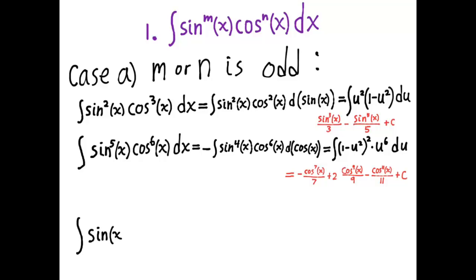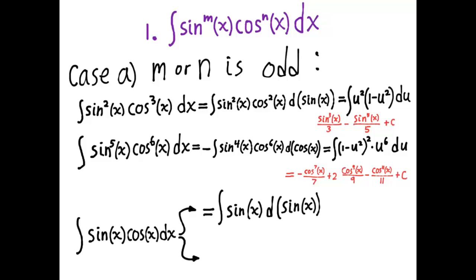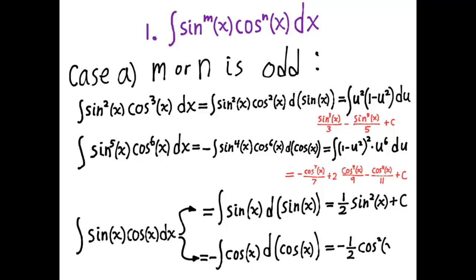What if m and n are both odd, as in the integral of sine of x times cosine of x dx? In that case, you have two different ways of integrating: you can use the fact that m is odd and integrate sine of x d sine x, or the fact that n is odd and integrate negative cosine of x d cosine of x. You get two different answers: one half sine squared of x plus c, and negative one half cosine squared of x plus c. How can one integral give two different solutions? The resolution is that those two values of c are not the same number — we call them c1 and c2 — and they differ by one half.